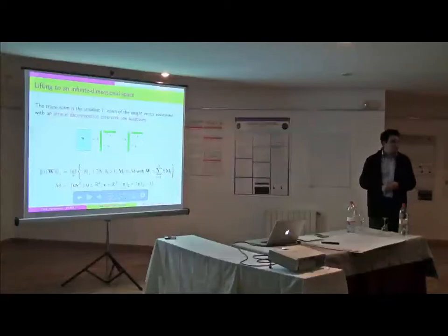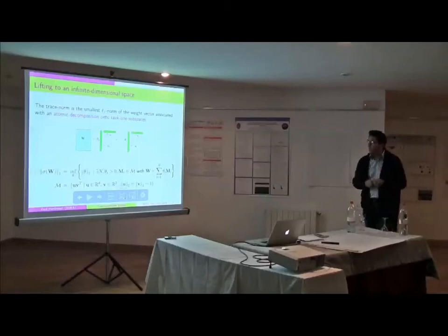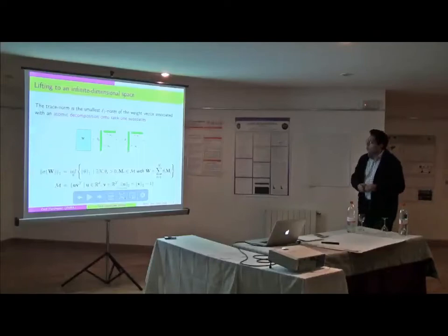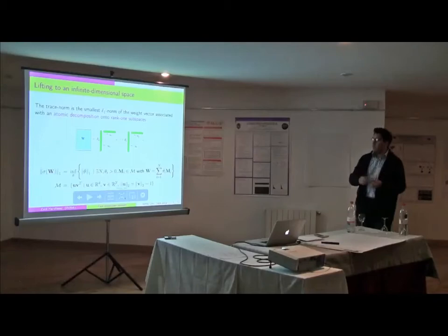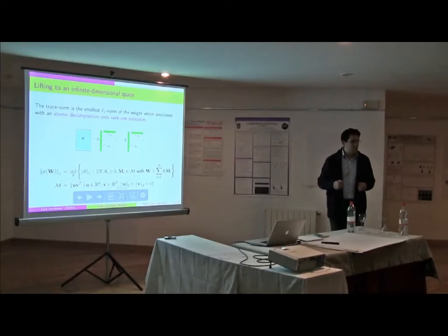Here, we use lifting into some infinite-dimensional space to perform the coordinate descent. Instead of using the singular value decomposition of W, which is obviously inaccessible because we don't know the solution, we just use decomposition of W onto rank-1 subspaces, which constitute an over-complete dictionary. Then the trace norm can just be written as the minimum L1 norm of the weights of the decomposition of W onto those rank-1 subspaces.